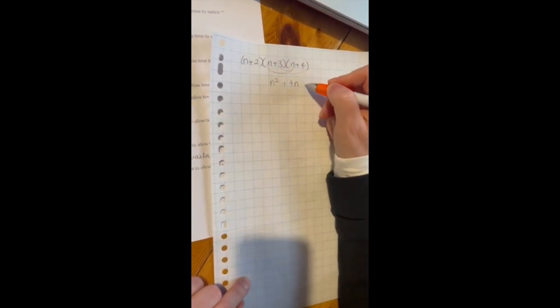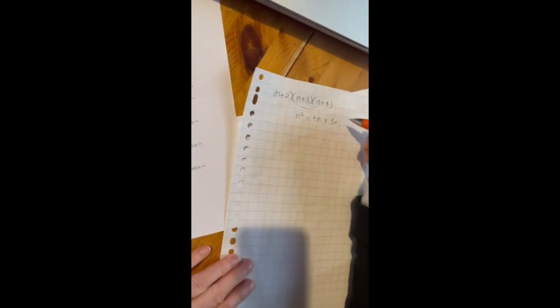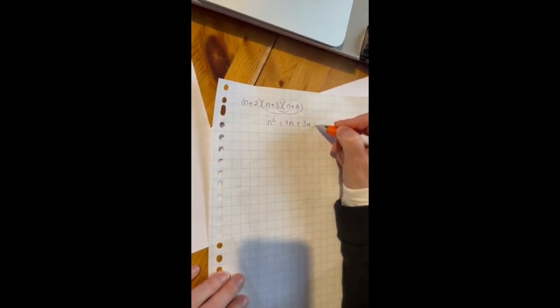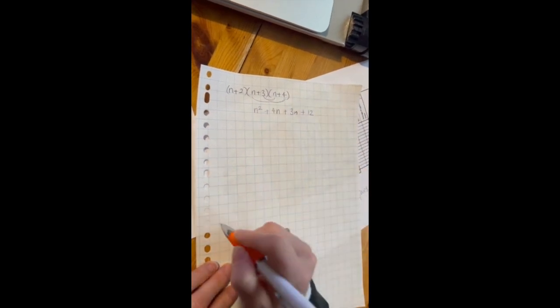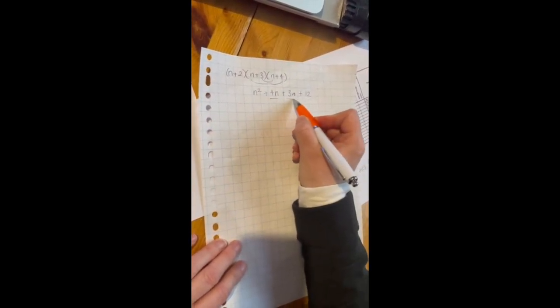Then you do 3 times n which is plus 3n, and the last one is 3 by 4 which is plus 12. So that's your first bracket, and you simplify because you can see that that's 4n, that's 3n, so you get plus 7n.